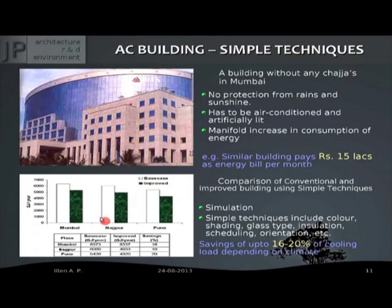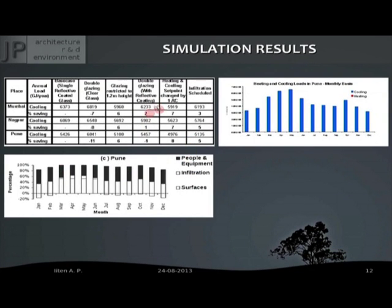We used simulation software — in this case a software called Transys. This shows results that can be obtained from simulation. You can do a parametric or what-if analysis: which type of glass is best, which type of wall is best, which color is best, what happens if you use shading or no shading? You can get monthly cooling load results, find out during which period your maximum energy requirement is, and from which part of your building most of the heat is coming — from internal gains, people inside, or the building envelope.